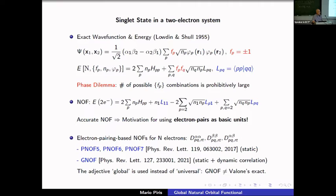A question from the audience: is H⁻ strong or weak correlation? The speaker acknowledges having only two electrons in H⁻ and says they have never calculated it and would need to think about it. They clarify the PNOF functional is very accurate for many molecules and many atoms, not claiming it is exact — the phase problem remains, and the functional still depends on the two-particle matrix in this sense.